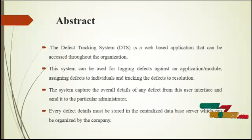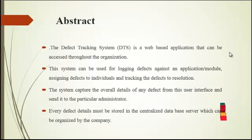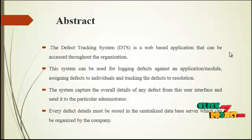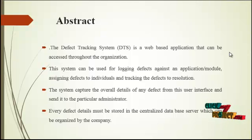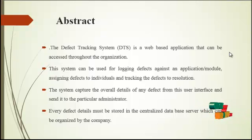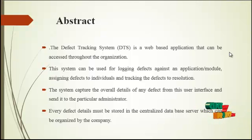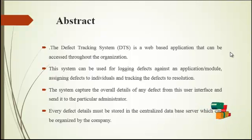The abstract of the system: the defect tracking system is a web-based application that can be accessed through the organization. The system can be used for logging defects against an application or module, assigning defects to individuals, and tracking defects to resolution. The system captures the overall details of any defect from the user interface and sends it to the particular administrator. Every defect detail must be stored in the centralized database server, which is organized by the company.